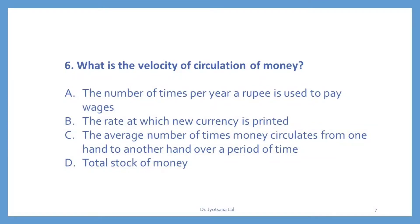Question number 6. What is the velocity of circulation of money? If you have studied the money supply chapter, you must have gone through this concept — it measures the speed of money. The options are: A — the number of times per year a rupee is used to pay wages; B — the rate at which new currency is printed; C — the average number of times money circulates from one hand to another hand over a period of time. The correct option is C — velocity of circulation of money measures the average number of times money circulates from one hand to another over a period of time.